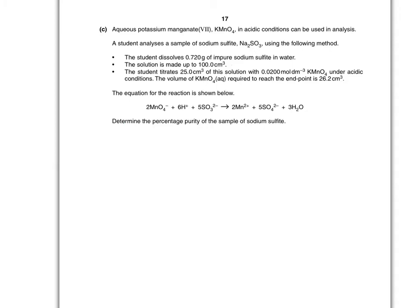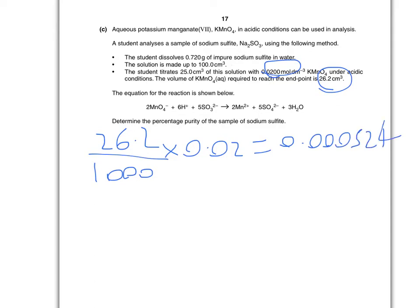Okay, so step one. We want to find the moles from the titrant. Well the end point is 26.2, the concentration is 0.02. So 26.2 over 1000 times by 0.02 equals 0.00524 moles. And that is moles of manganate.